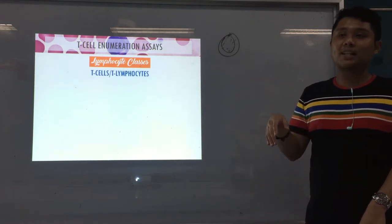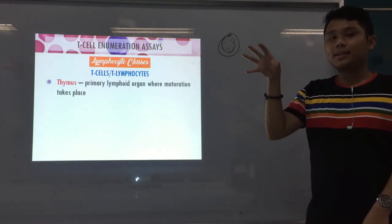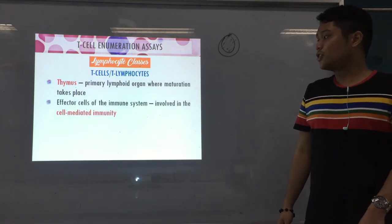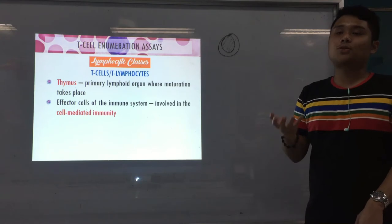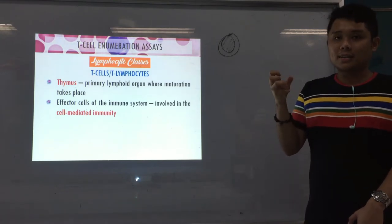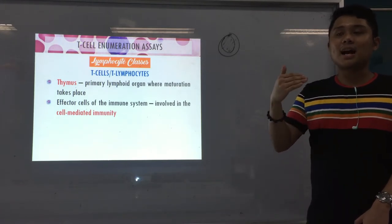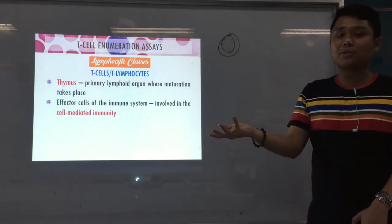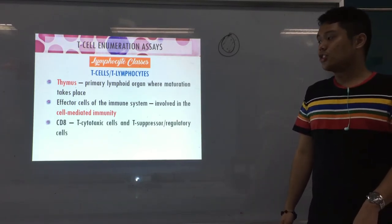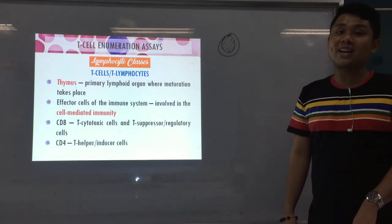The first class is T-cells or T-lymphocytes. They are named 'T' because they differentiated in the thymus. They are the effector cells of the immune system and are involved in cell-mediated immunity — the type of immunity that involves the cells themselves. We have CD8, which includes T-cytotoxic and T-suppressor or T-regulatory cells, and CD4, which are your T-helper or inducer cells.